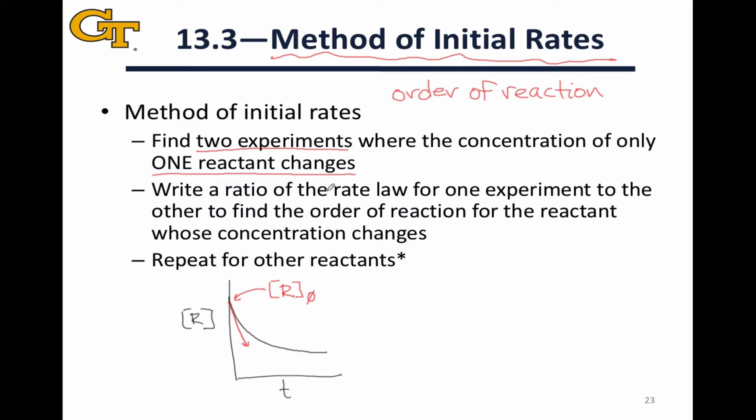On the other side of the equation, we'll have a ratio of the initial rates, which will have been measured previously. We can then use logarithms and some straightforward math to figure out the order of reaction for this reactant whose concentration changed.